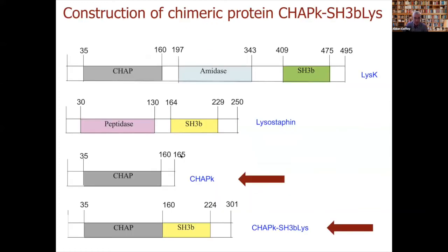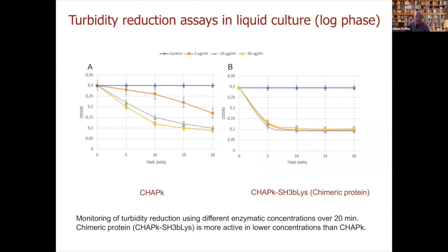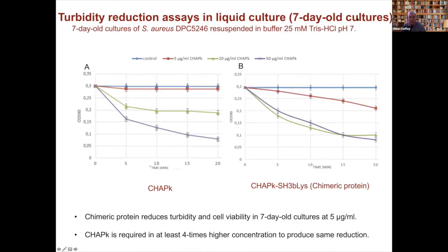The modification we made was to take the cell binding domain of lysostaphin and fuse it to the CHAPK enzymatic domain of phage K, making a chimeric protein — the only modification that resulted in improved activity. At five micrograms per ml, CHAPK shows limited activity, whereas the chimeric protein at five micrograms per ml gives far better and far quicker activity, even in old cultures where CHAPK shows no reduction in optical density at all.